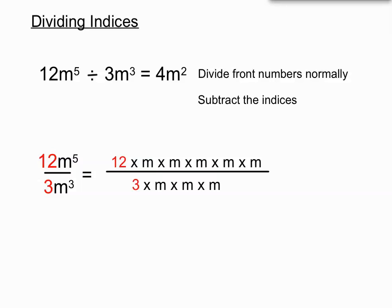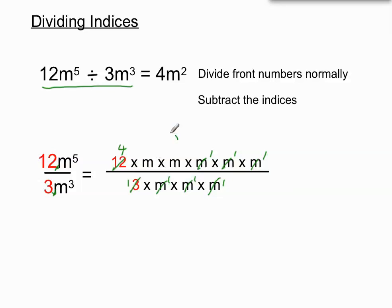I'll show you in an expanded way — when you've got 12m to the 5 divided by 3m to the 3 written horizontally, we can write it as a fraction with 12 on the top and 3 on the bottom. The 12 beside the m to the 5 has an invisible multiply between it, and similarly for the 3 and m on the bottom. We cancel the m's as before, and then we cancel the numbers: 3 into 3 is once, and 3 into 12 is 4 times. So on the top we have 4 times m times m remaining, giving us 4m squared.